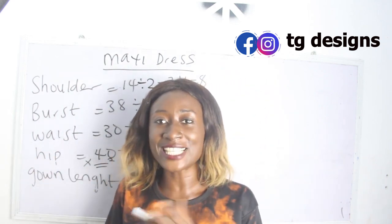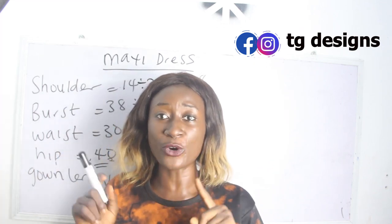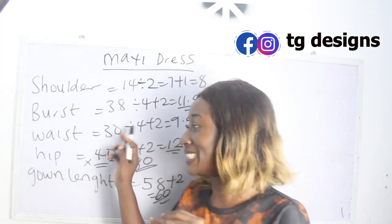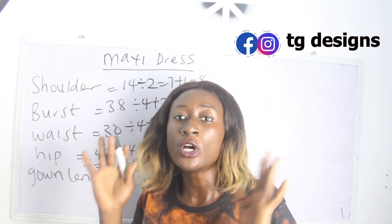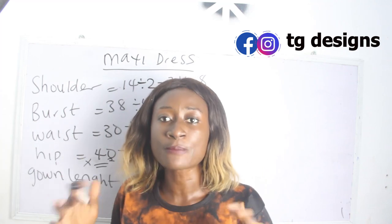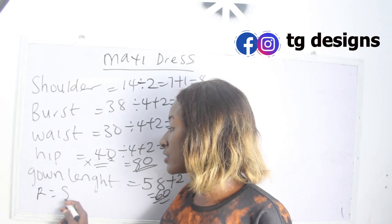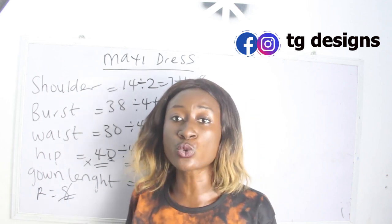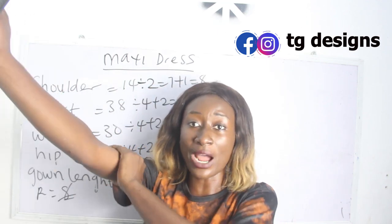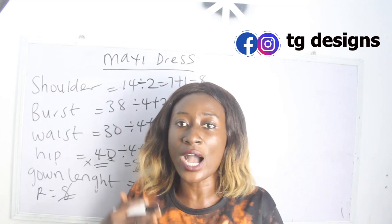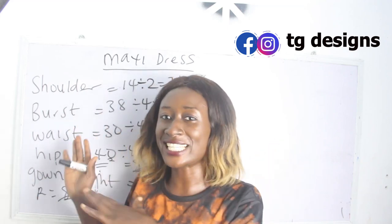Another thing you also need to take note of is your round sleeve measurement — your round sleeve measurement is needed in this style. My round sleeve is 12 inches. 12 divided by 2 I have 6, plus 2 inches I have 8 inches. So whatever you have for your round sleeve, go ahead and divide it by 2 and then add two inches. Don't forget to include your round sleeve measurement when getting your measurements.